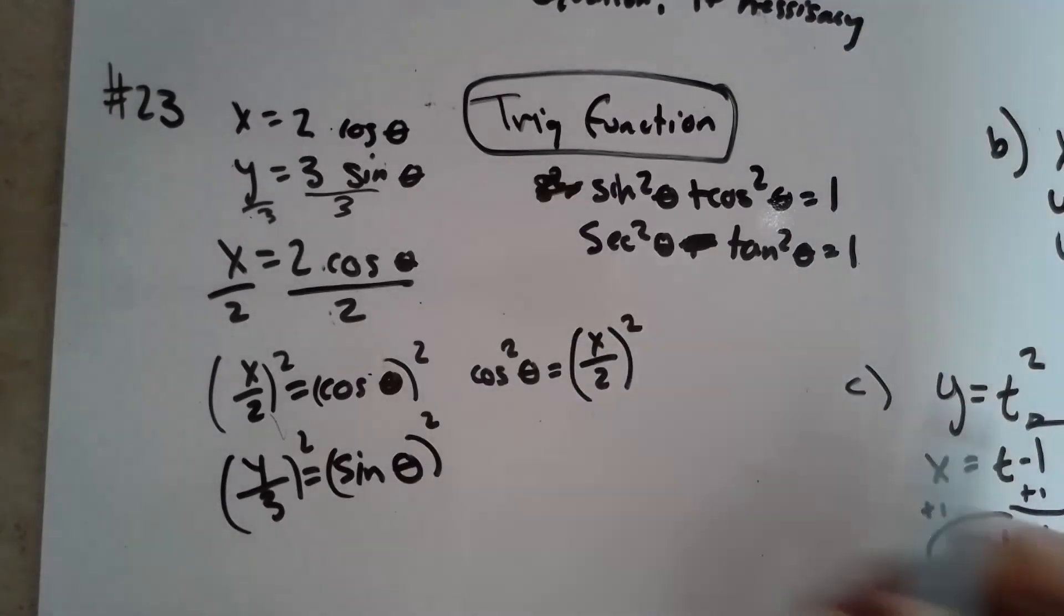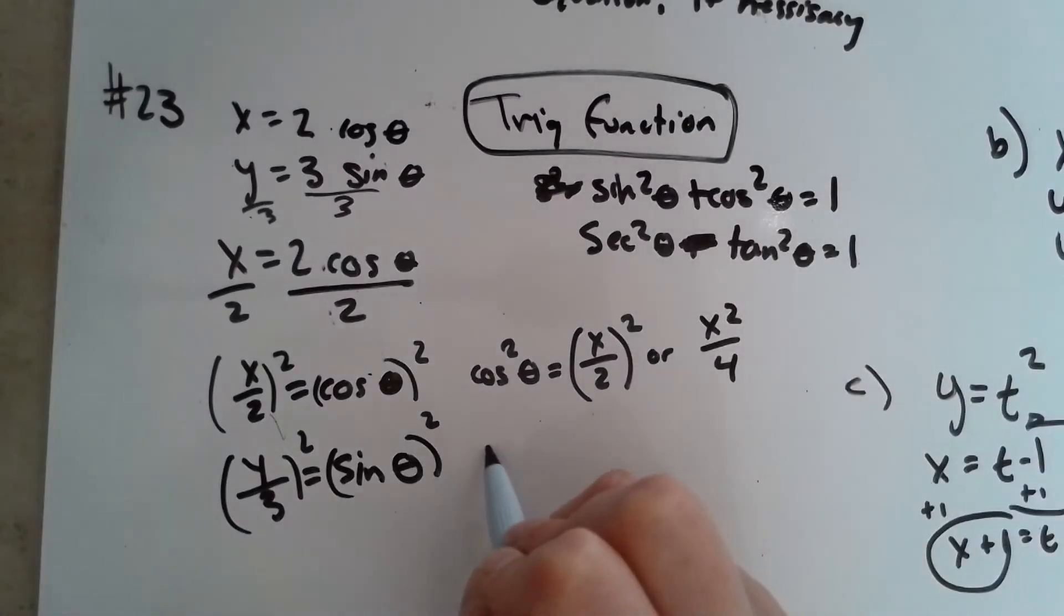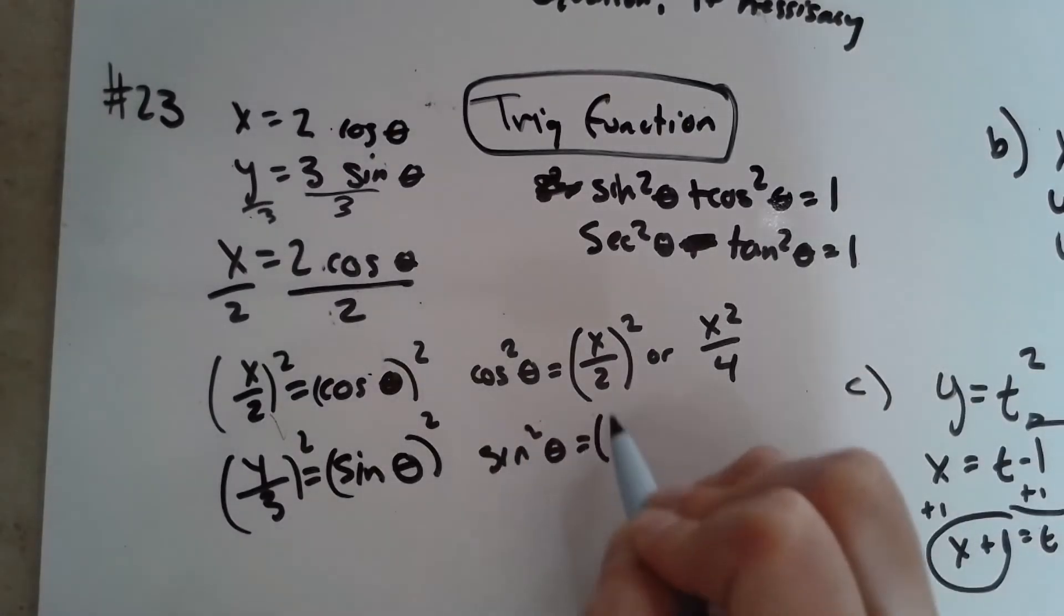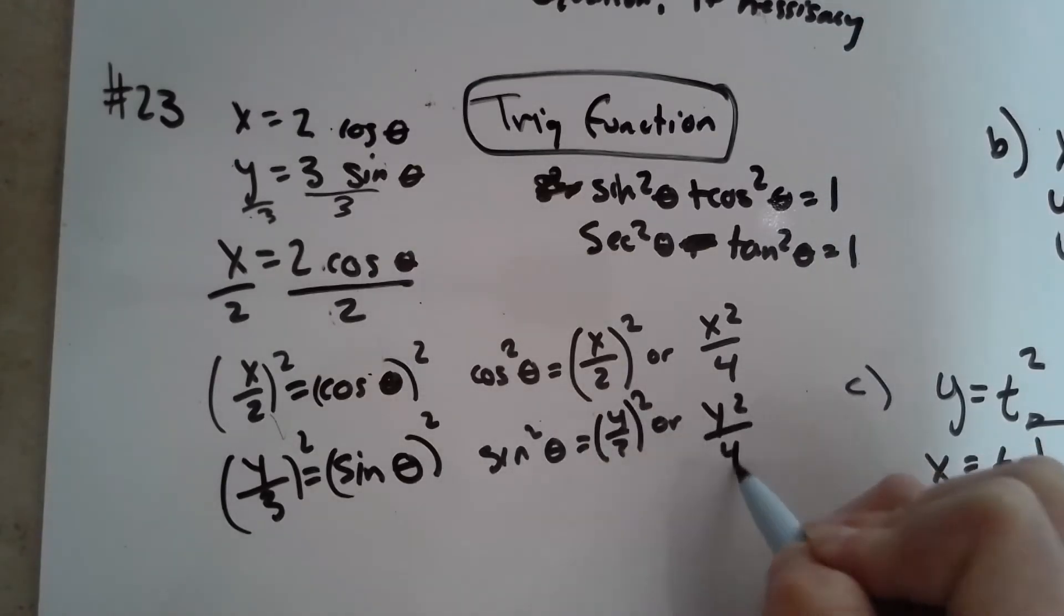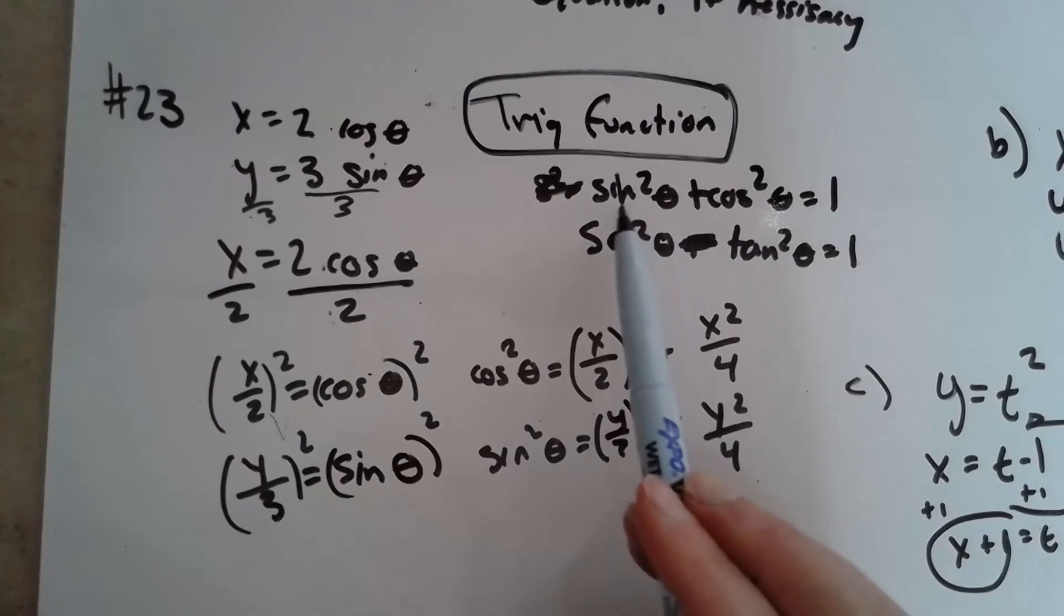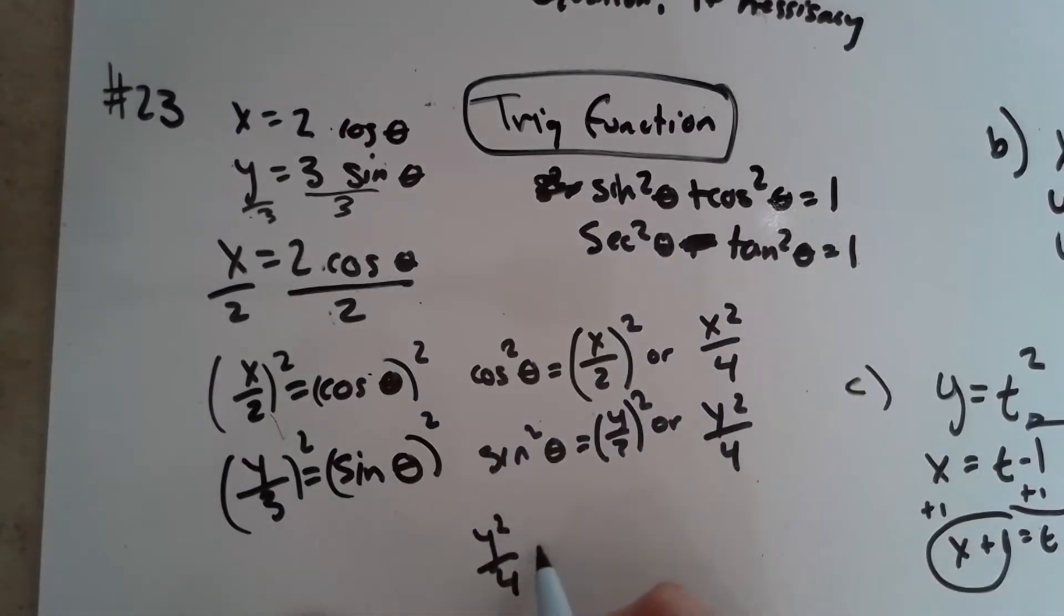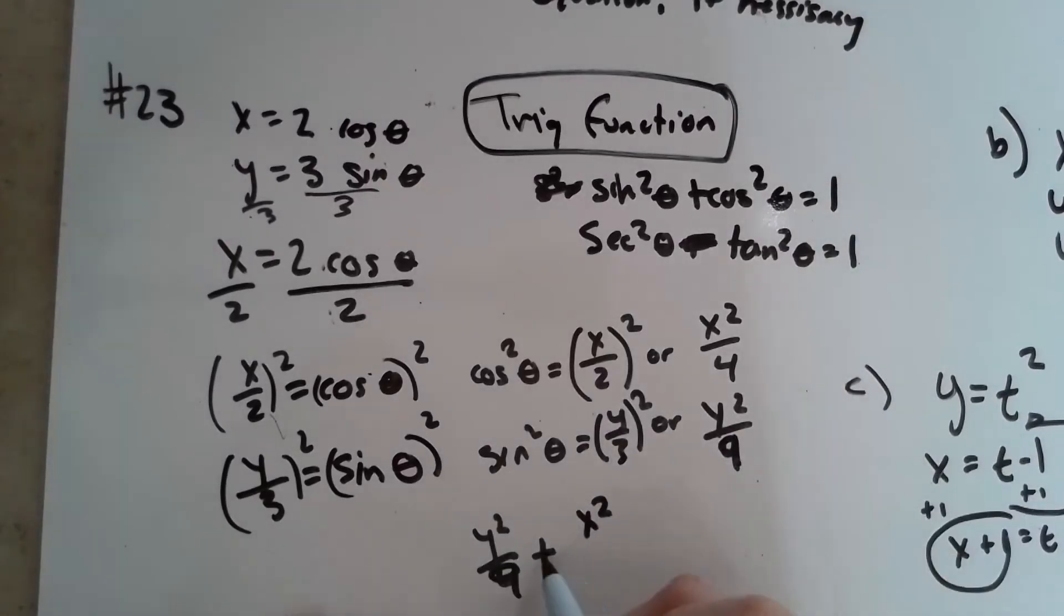Okay, so this is where it's a little different. I'm actually going to square both sides. So now I have cosine squared theta equals x over 2 squared, or you could say x squared over 4. And then I'd have sine squared theta equals y over 3 squared, or y squared over 9. So now that I know what cosine and sine are, I could plug them into this trig identity. So I'd have y squared over 9 plus x squared over 4 equals 1.